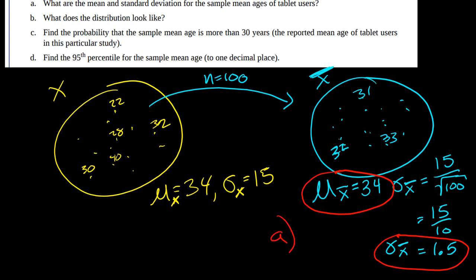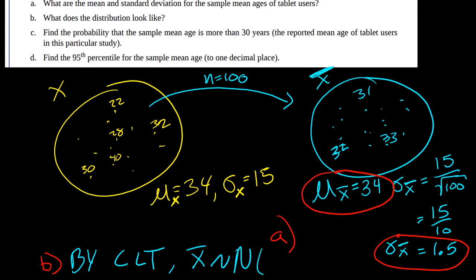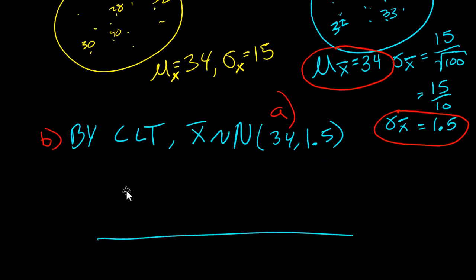Moving on to part B: what does this distribution look like? By the central limit theorem, we know that the distribution of X̄ is going to be normally distributed. X̄ is normally distributed with a mean of 34 and a standard deviation of 1.5. So it looks like a normal distribution with mean at 34.